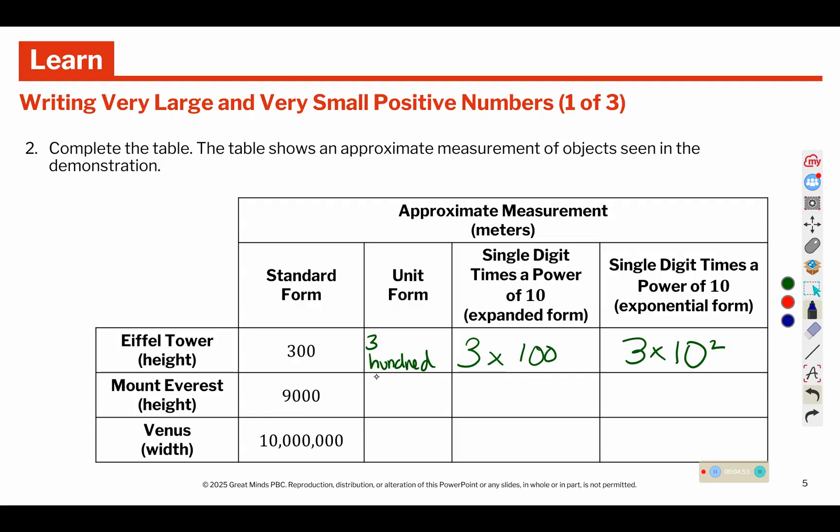This one is 9,000, which is 9 times 1,000, but 1,000 can be rewritten as 10 to the third power. This is 1 in the 10 million position. This is 1 in the 10 million position. So that is 1 times 10 to the 3, 6, 7th power.